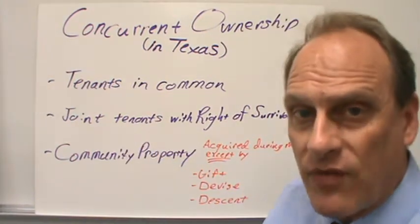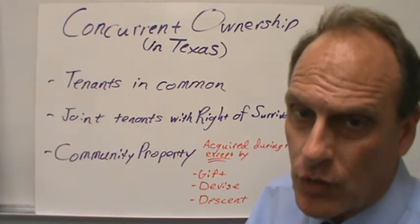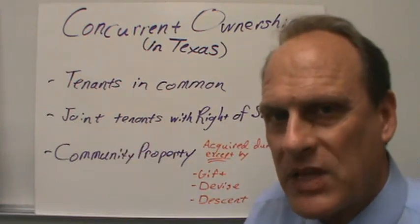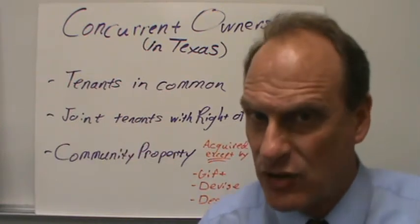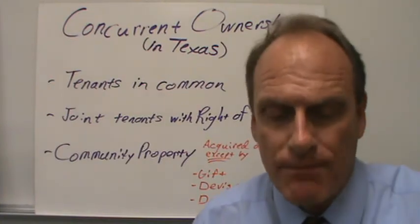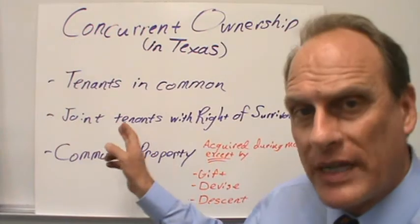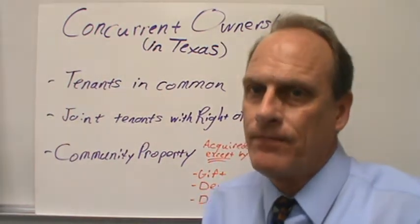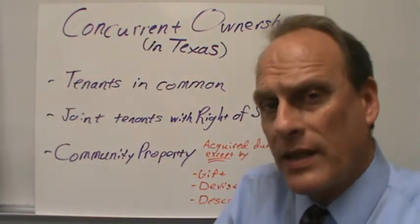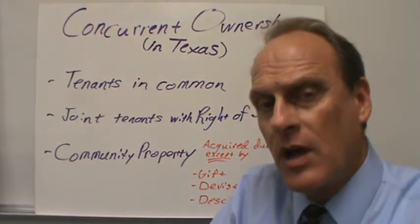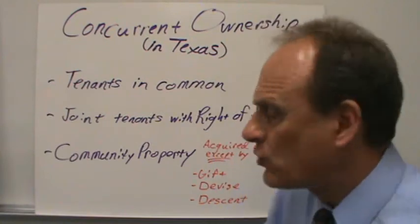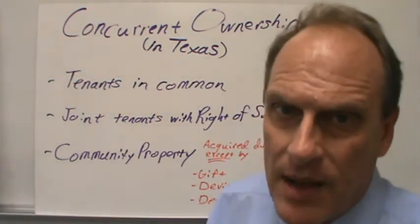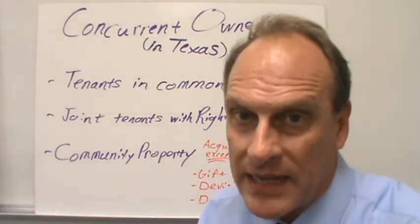Joint tenant with right of survivorship is a wonderful estate planning tool. We don't see real property held this way that much in Texas, but we do see a lot of personal property — particularly intangible personal properties like stocks and bank accounts — held as joint tenant with right of survivorship. What that means is the owners own the property together, and when one of them passes, the property becomes owned by the survivor. That's why we say there is a right of survivorship.